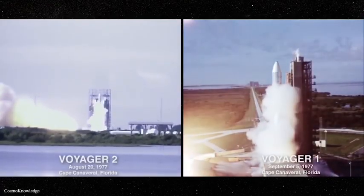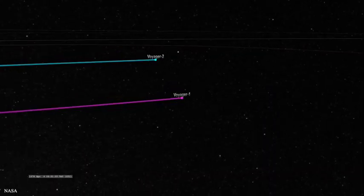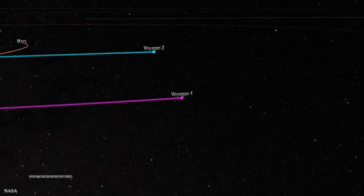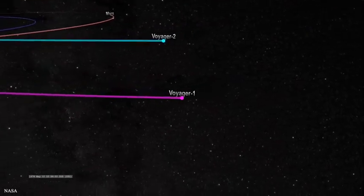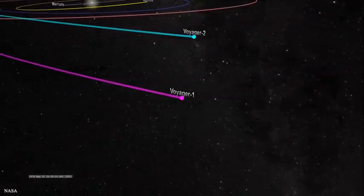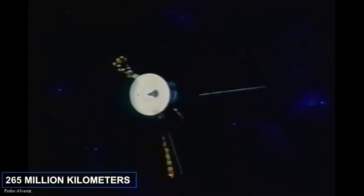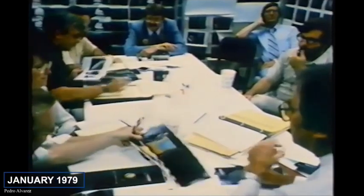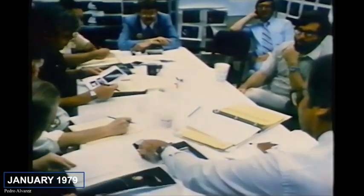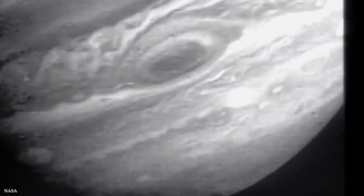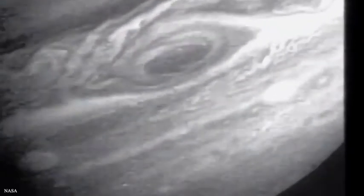NASA's Voyager 1 was launched after Voyager 2, but because of a faster route, it exited the asteroid belt earlier than its twin, having overtaken Voyager 2 in the end of 1977. It began its Jovian imaging mission in April of 1978 when it was about 265 million kilometers from the planet. Images sent back by January of 1979 indicated that Jupiter's atmosphere was more turbulent than during the Pioneer flybys in 1973.